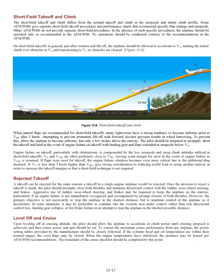Rejected Takeoff. A takeoff can be rejected for the same reasons a takeoff in a single-engine airplane would be rejected. Once the decision to reject a takeoff is made, the pilot should promptly close both throttles and maintain directional control with the rudder, nose wheel steering, and brakes. The primary objective is not necessarily to stop the airplane in the shortest distance, but to maintain control as it decelerates. In some situations, it may be preferable to continue into the overrun area under control rather than risk directional control loss, landing gear collapse, or tire/brake failure in an attempt to stop in the shortest possible distance.